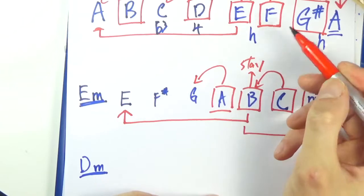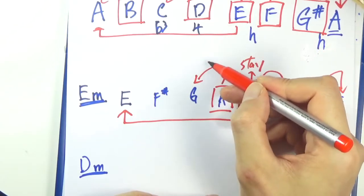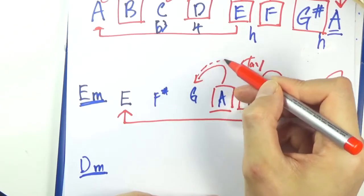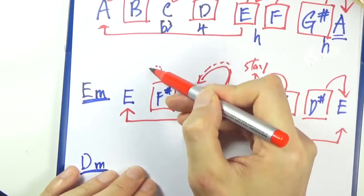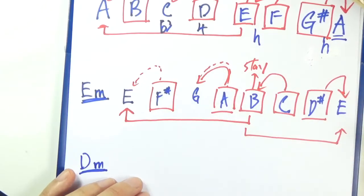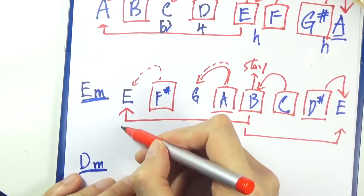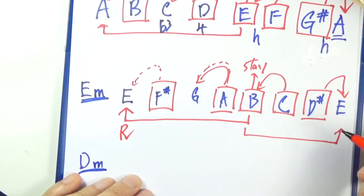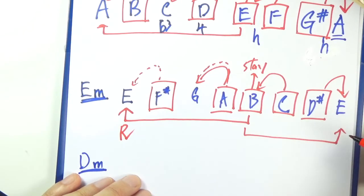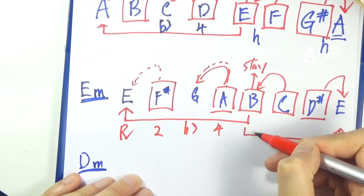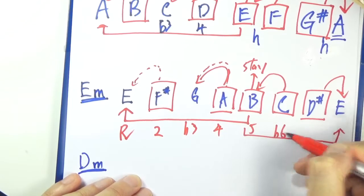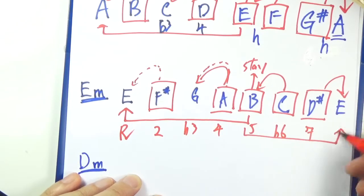Would go down to the flat 3, sorry it should be a dotted line, so do that and then up sharp dotted line down to E. So for neatness sake, root to flat 3, fourth, fifth, flat 6, major 7, and then root again.